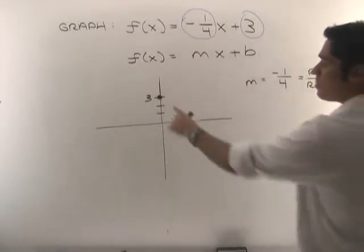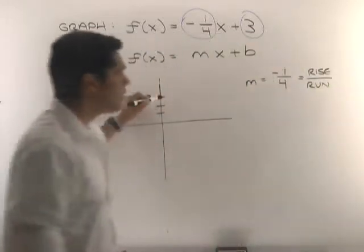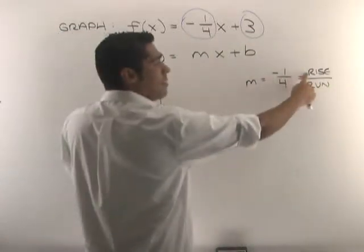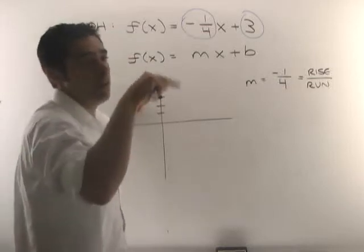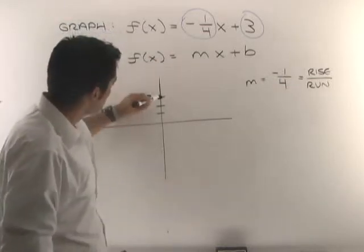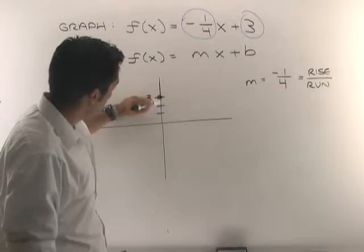So now, from this point to get to another point on the line, I'm going to rise by negative one. Now, rising by negative one actually means not rising but going down by one. So I just use my pen and I go down one here.